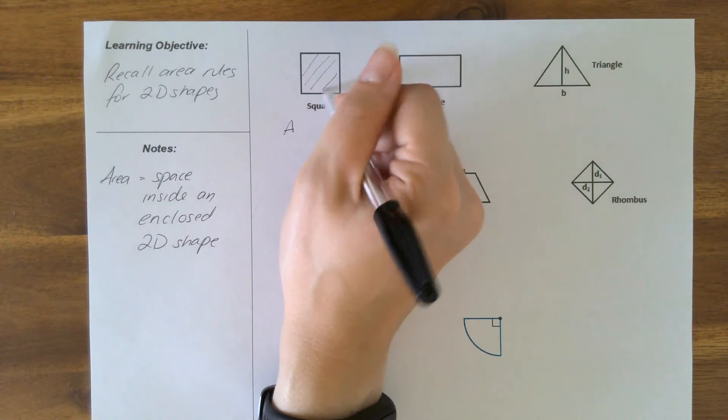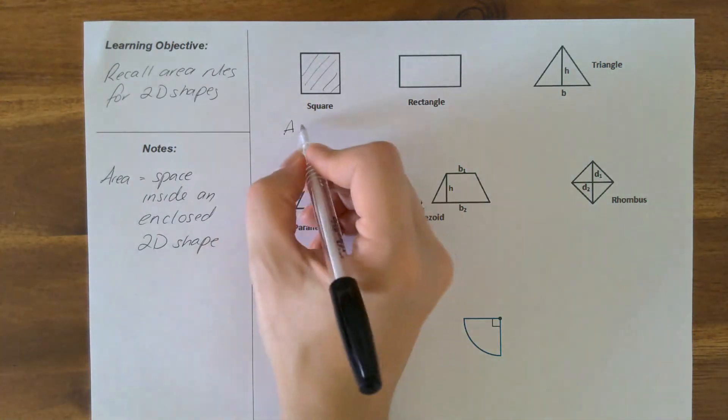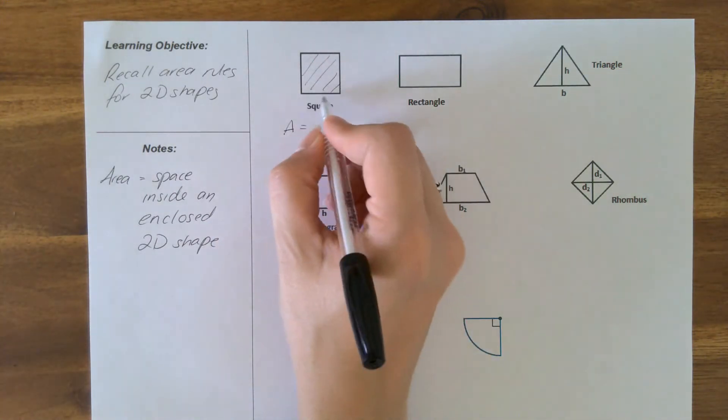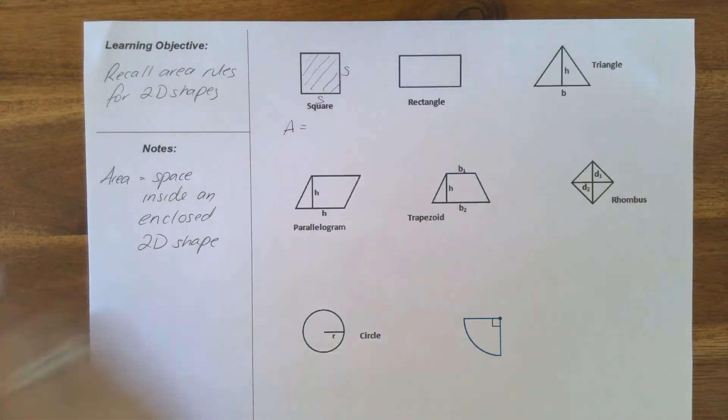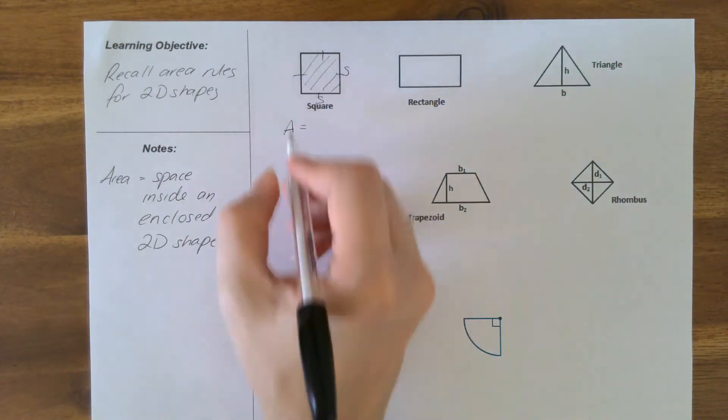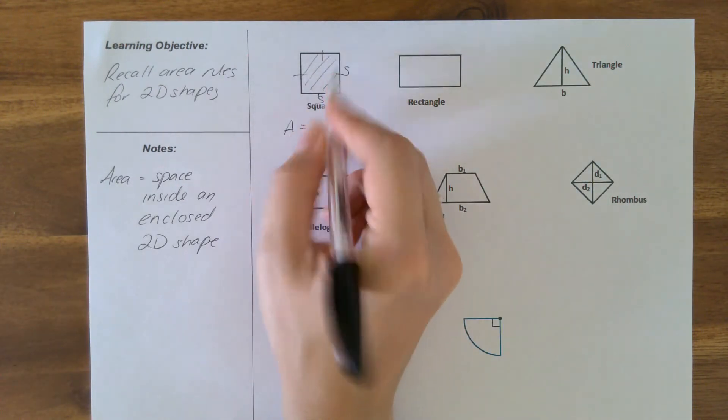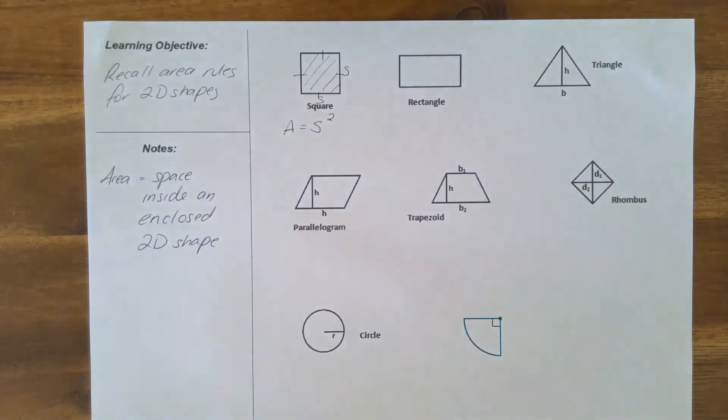We're finding, say, the shaded area on this square. So an area of a square is going to have to identify the sides, remembering that all of the sides are the same length. So our area is side times side, or side squared.